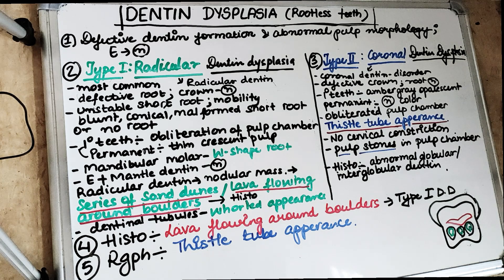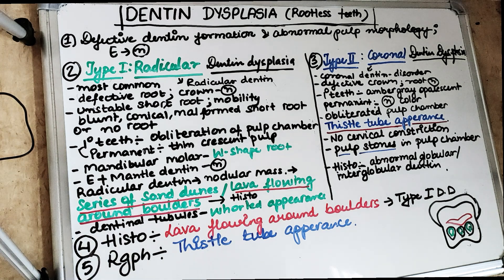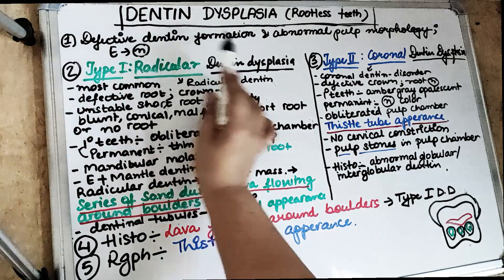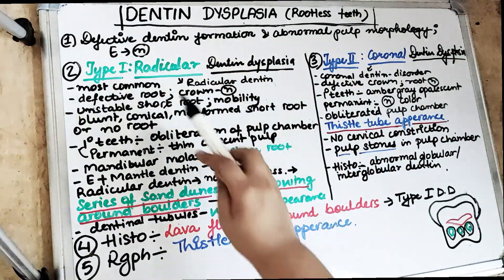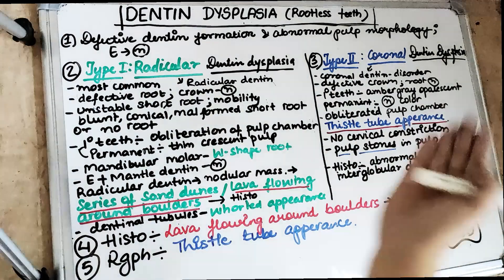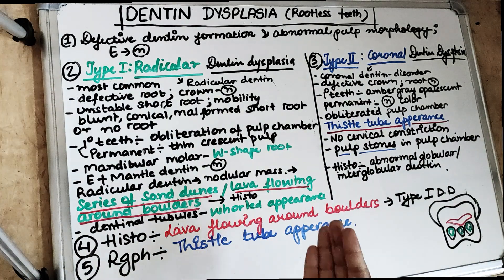Welcome to the 5 in 5 series, where we cover each topic under 5 headings in 5 minutes. Today's topic is dentine dysplasia, also called rootless teeth. Make sure you subscribe to our channel and click on the bell icon so you don't miss any future videos. So what is dentine dysplasia? Dysplasia means defective dentine formation, and because of this defective dentine formation there is abnormal pulpal morphology, but the enamel is normal in dentine dysplasia.